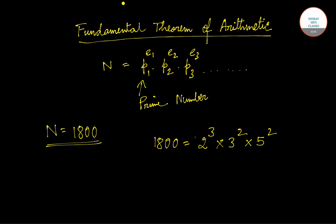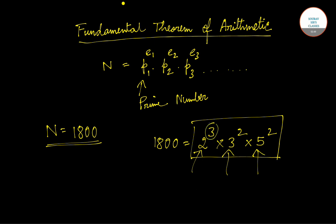So this is our form: p1 to the power e1 into p2 to the power e2 into p3 to the power e3, where 2, 3, and 5 are the prime numbers and 3, 2, and 2 are their respective powers.